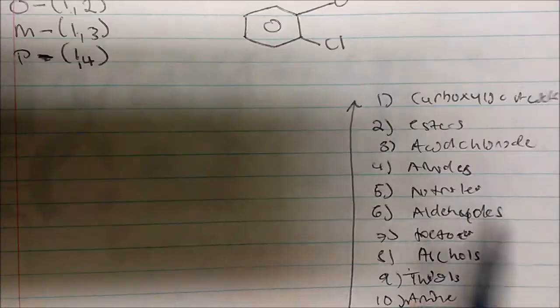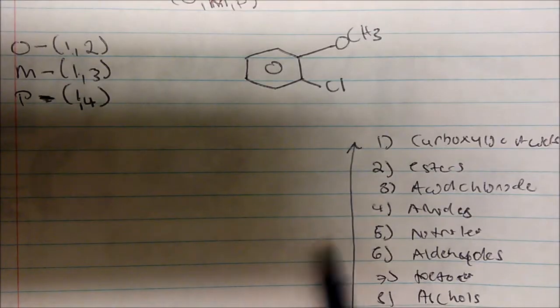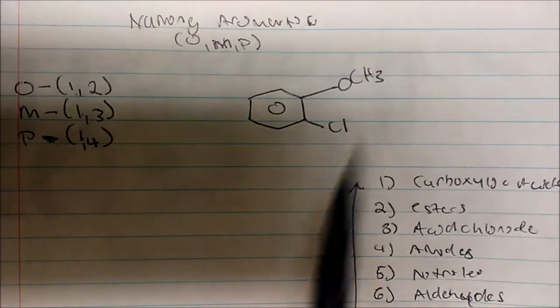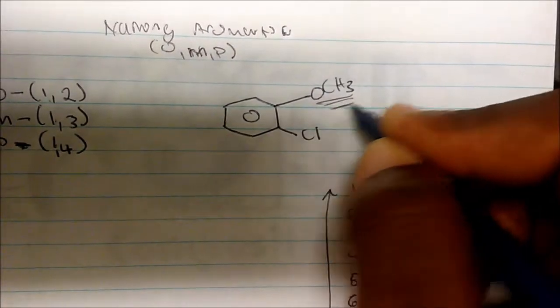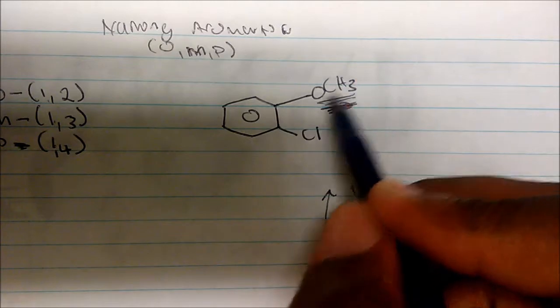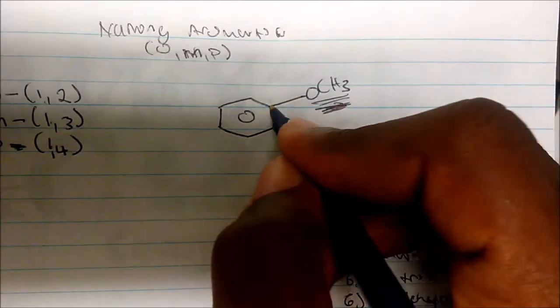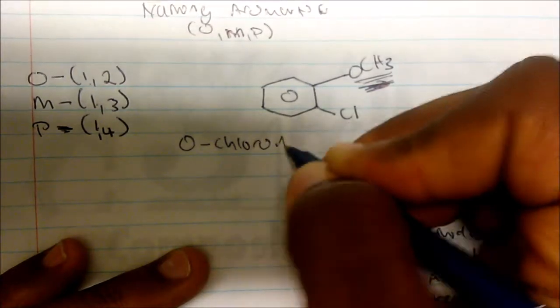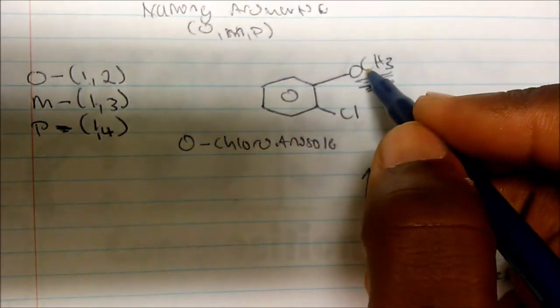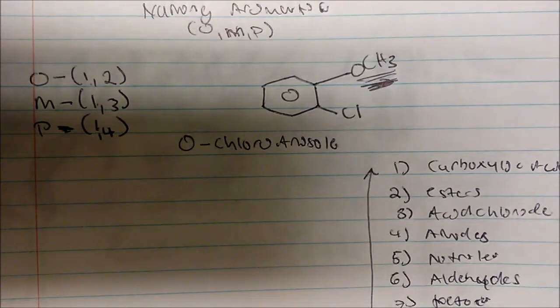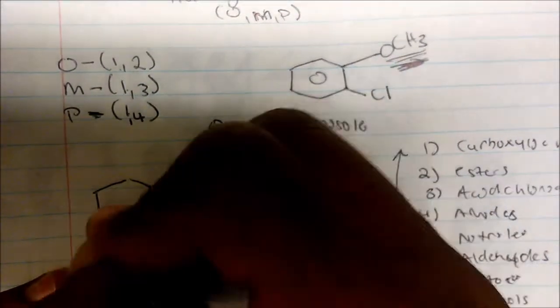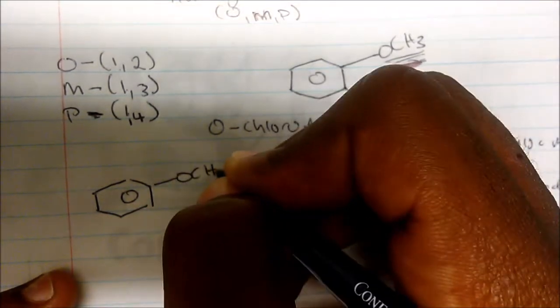Looking at our first example: we have an aromatic with an OCH3 group and a chlorine. Halogens are at the bottom of the priority list, while R groups (like OCH3, which makes this anisole) are higher. Since the chlorine is 1,2-substituted relative to the anisole parent, this compound is named o-chloroanisole.